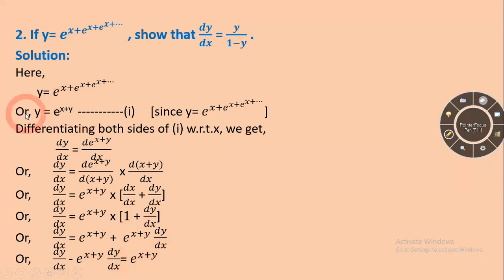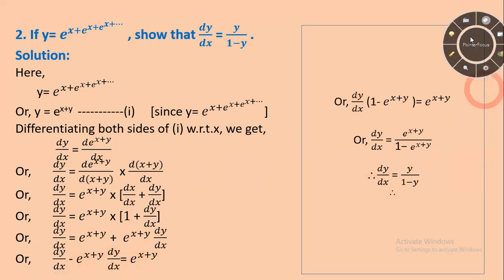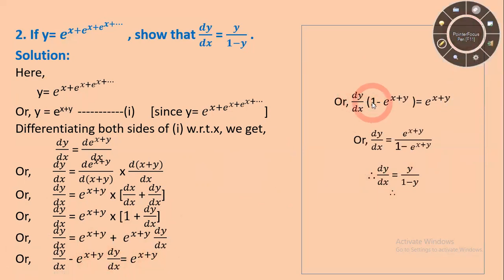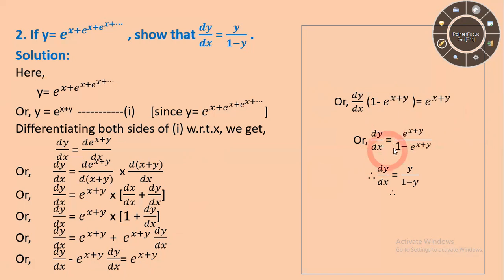Rearranging, dy/dx minus e^(x plus y) times dy/dx equal to e^(x plus y). Taking dy/dx as common: dy/dx times (1 minus e^(x plus y)) equal to e^(x plus y). Therefore dy/dx will be equal to e^(x plus y) upon (1 minus e^(x plus y)).